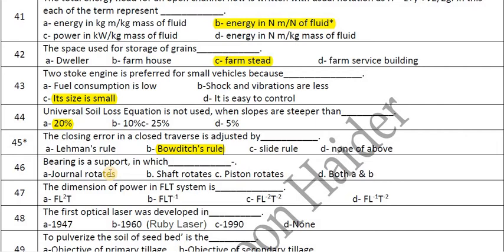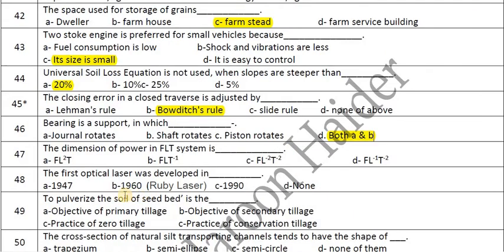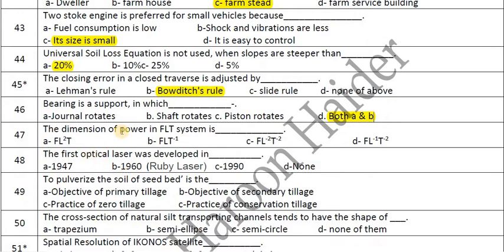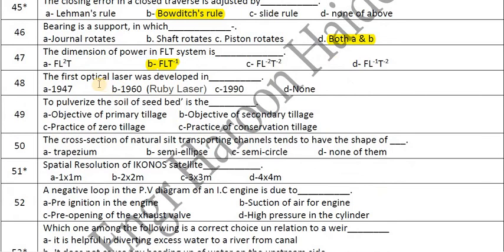A bearing is a support in which a journal and shaft rotate — both a and b. The dimension of power in the FLT system is FLT⁻¹. The first optical laser was developed in 1960; its name was the ruby laser.